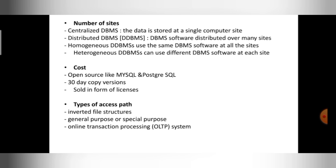Homogeneous DBMS means you use the same DBMS software at all sites. For example, if you are using MySQL software at every site, then it is homogeneous. Heterogeneous DBMS means you use different DBMS software at each site — for example, Oracle at one site and MySQL at another. So based on the number of sites, I can classify DBMS into four types: centralized, distributed, homogeneous, and heterogeneous.